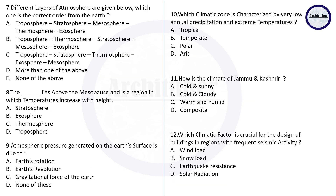Question seven: different layers of the atmosphere are given below — which one is the correct order from the Earth, starting from the lowest level to the upper level? The correct answer is troposphere, stratosphere, mesosphere, thermosphere, and exosphere.